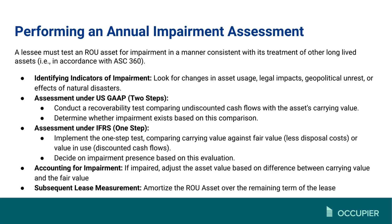The next piece is the annual impairment review. Just like any other long-lived asset — intangibles, PP&E, real estate — right-of-use assets also have to be assessed for impairment. On the screen is an overview of how to perform that impairment. The first step is identifying any indicators of impairment, which we'll go through on the next slide.